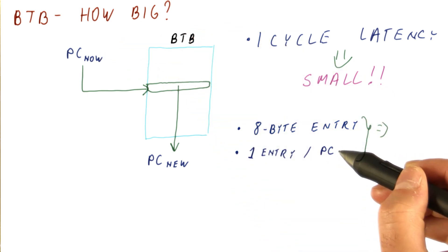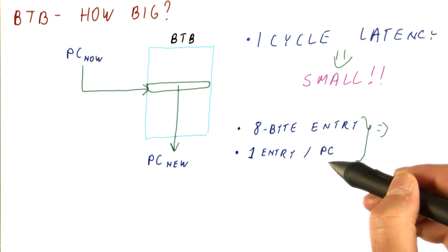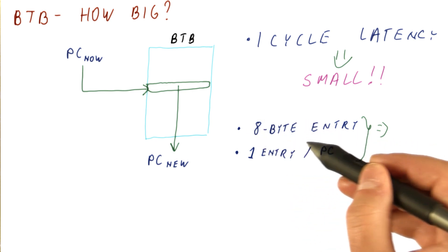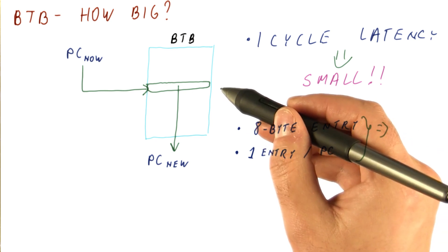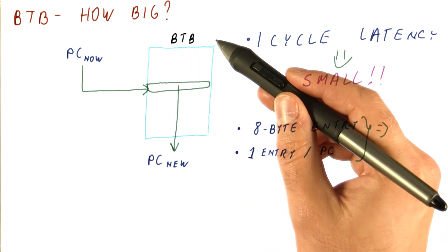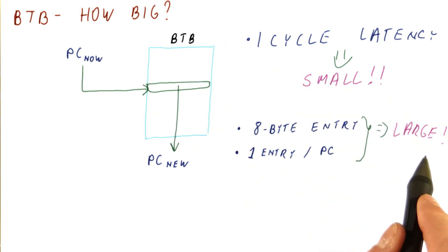The program can be large. Note that an instruction can be 4 bytes, yet we need 8 bytes in the BTB. So really, the BTB needs to be as large as the program itself, which is really large.